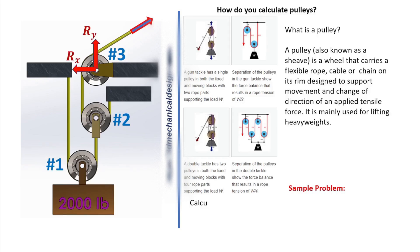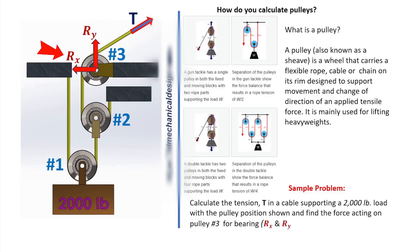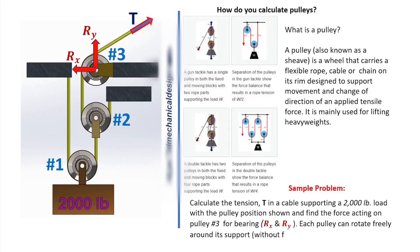Sample Problem. Calculate the tension T in a cable supporting a 2,000 pounds load, with the pulley position shown, and find the force acting on pulley number 3 for bearing: Rx and Ry. Each pulley is free to rotate around its support, frictionless, and the weight is small compared to the load — the mass of the cable is negligible.